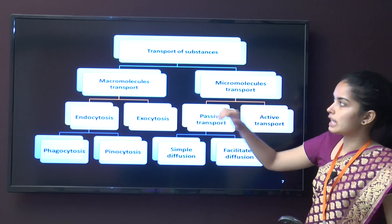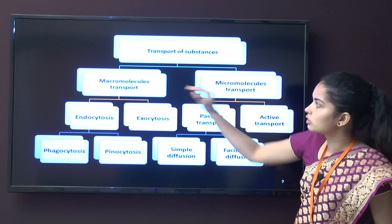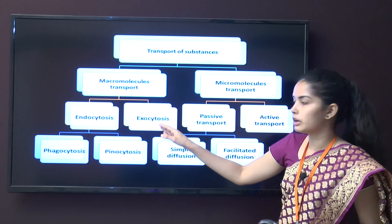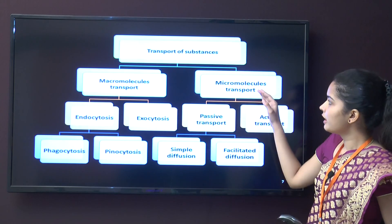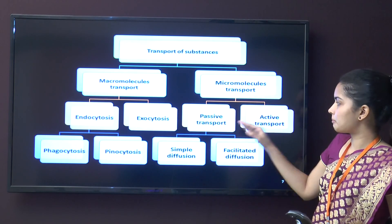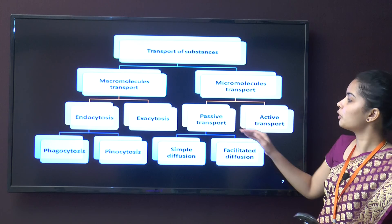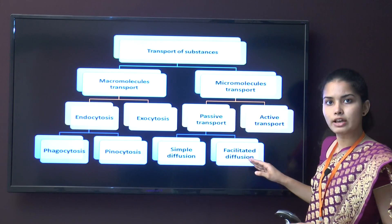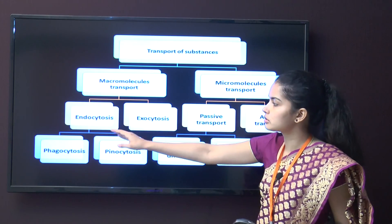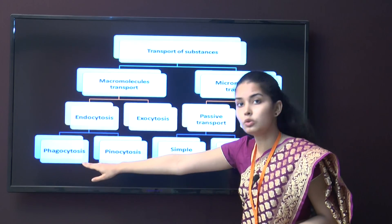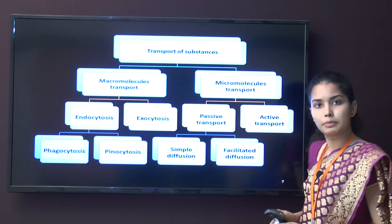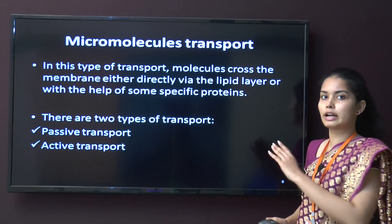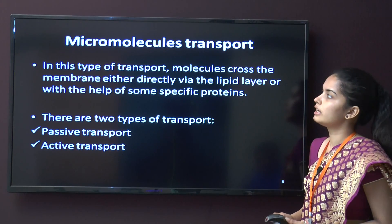This is the table showing transport of substances: macromolecule transport and micromolecule transport. In macromolecule transport there are two types — endocytosis and exocytosis. In micromolecule transport there are passive transport and active transport. Passive transport is further divided into simple diffusion and facilitated diffusion, while endocytosis is divided into phagocytosis and pinocytosis.